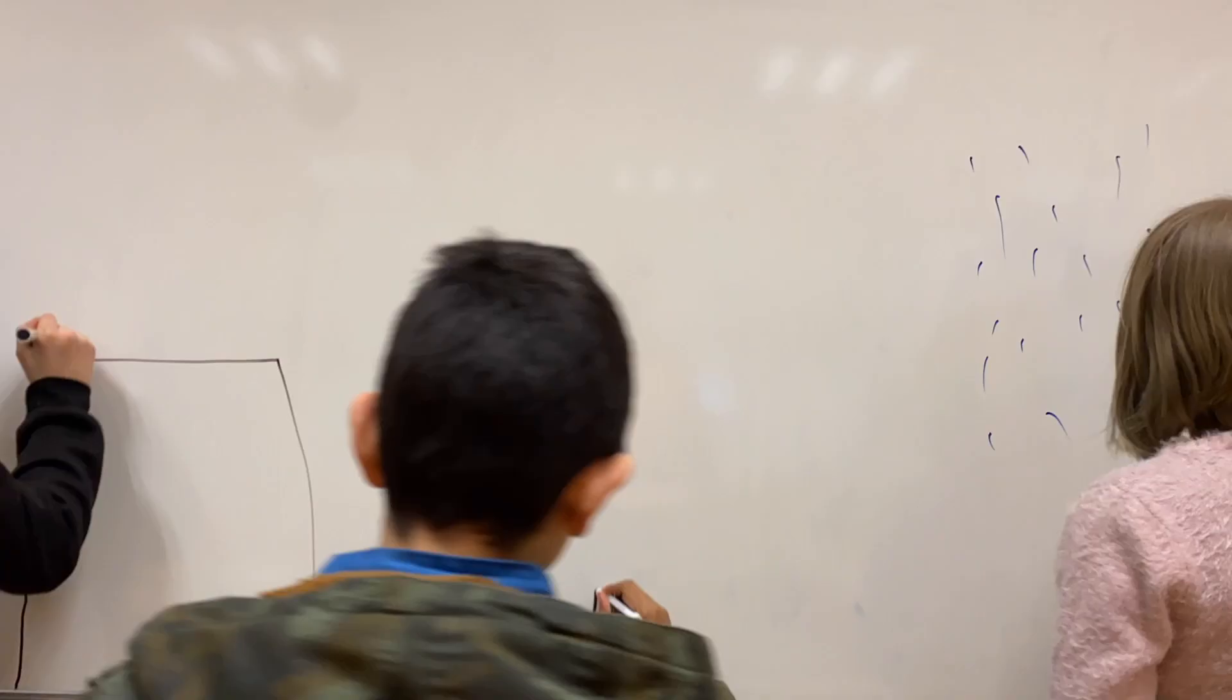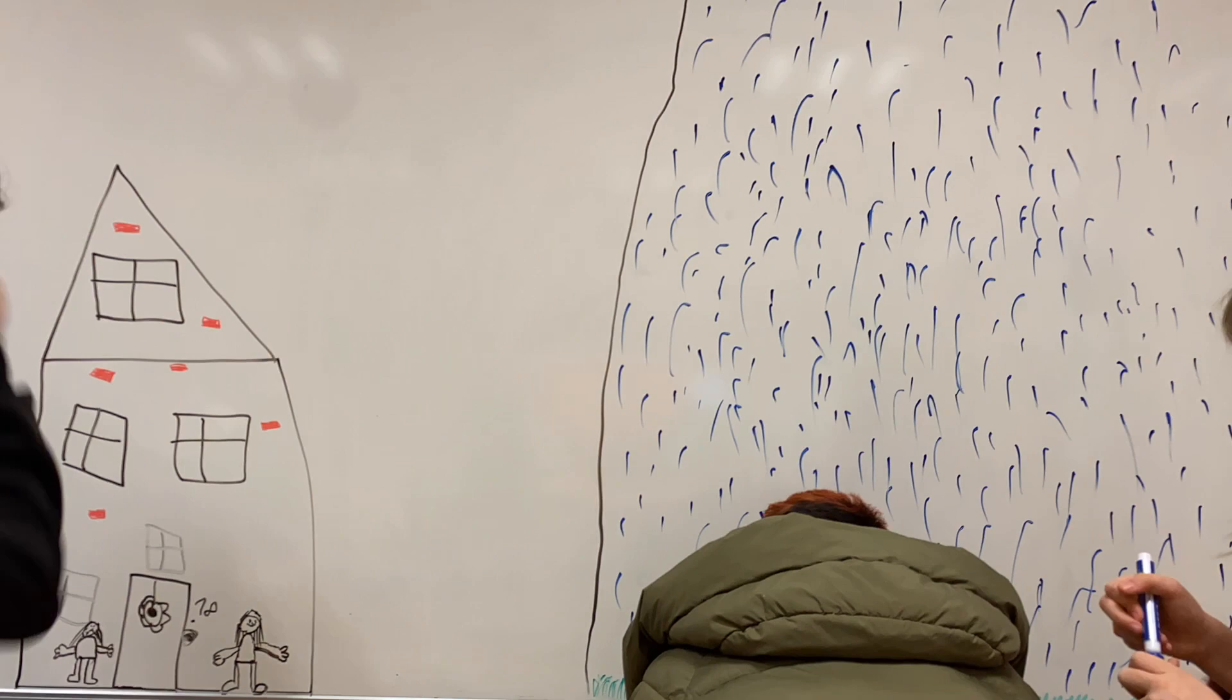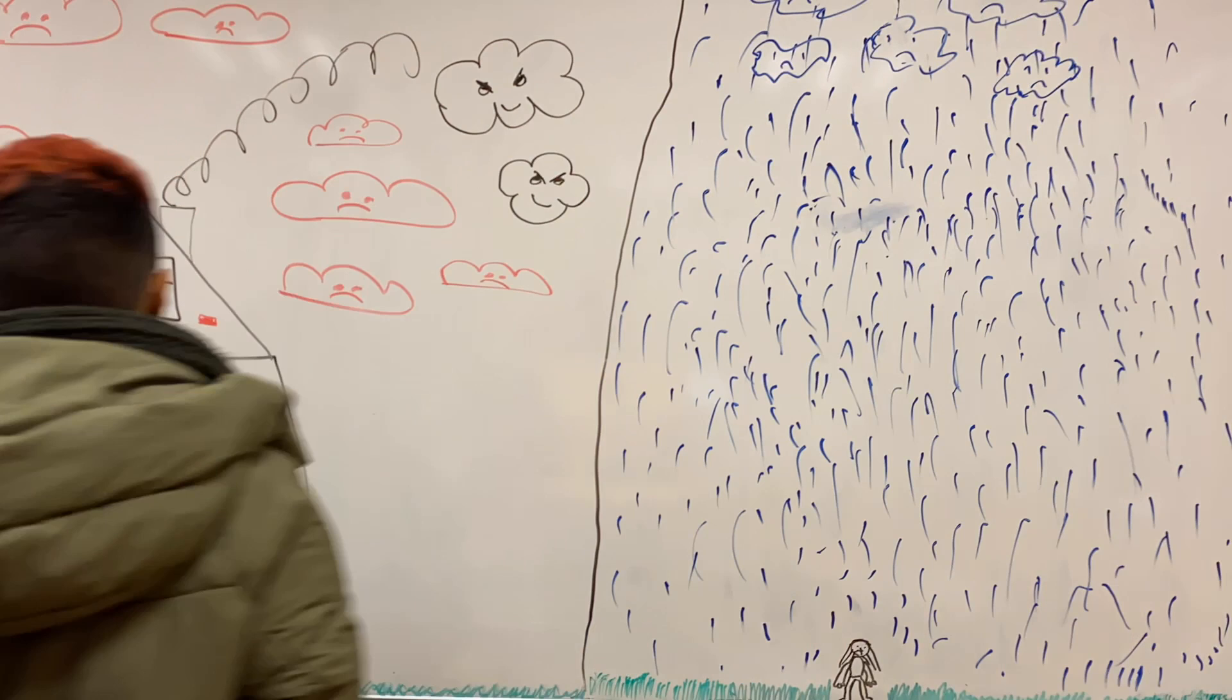Meine Familie hat nur Streit und füreinander keine Zeit. Ich halte es langsam nicht mehr aus. Wir vergossen viele Tränen, meine Eltern mussten sich trennen. Ich renne aus dem Haus.